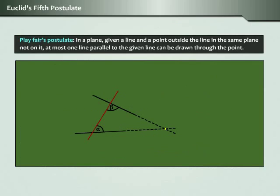Playfair's Postulate: In a plane, given a line and a point outside the line in the same plane, not on it, at most one line parallel to the given line can be drawn through the point.